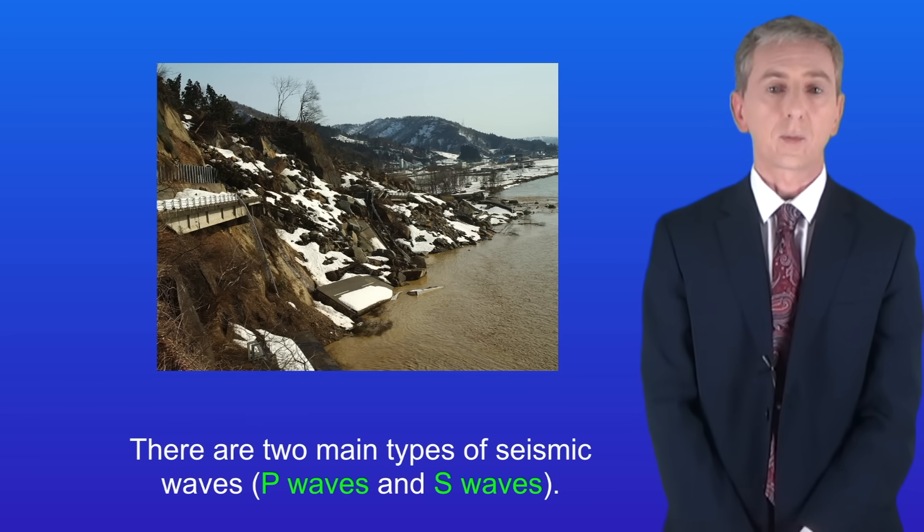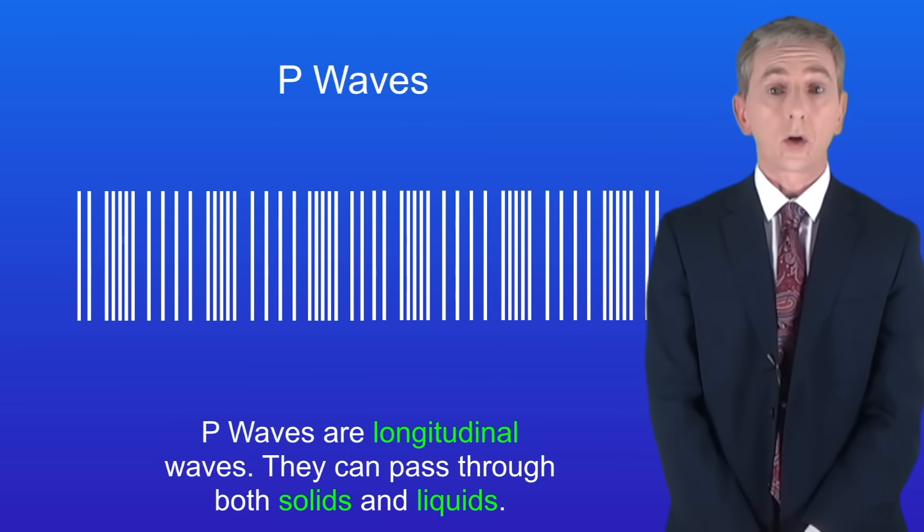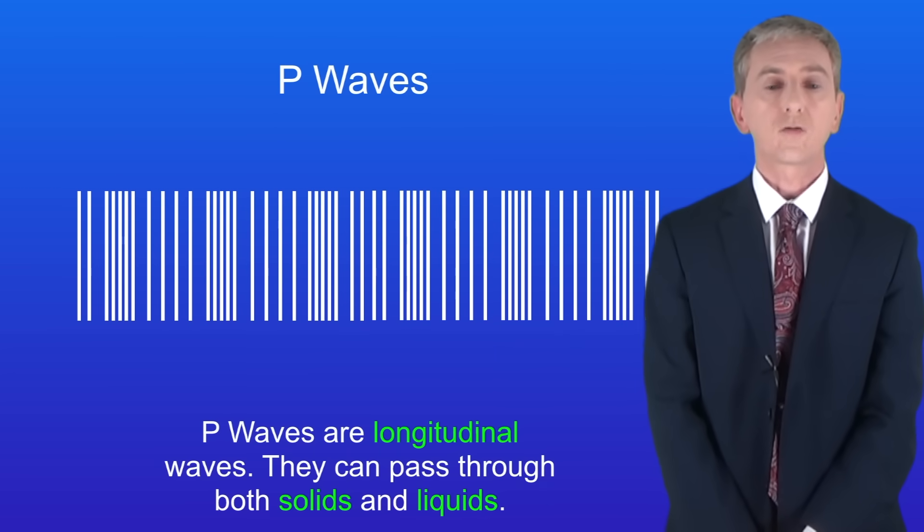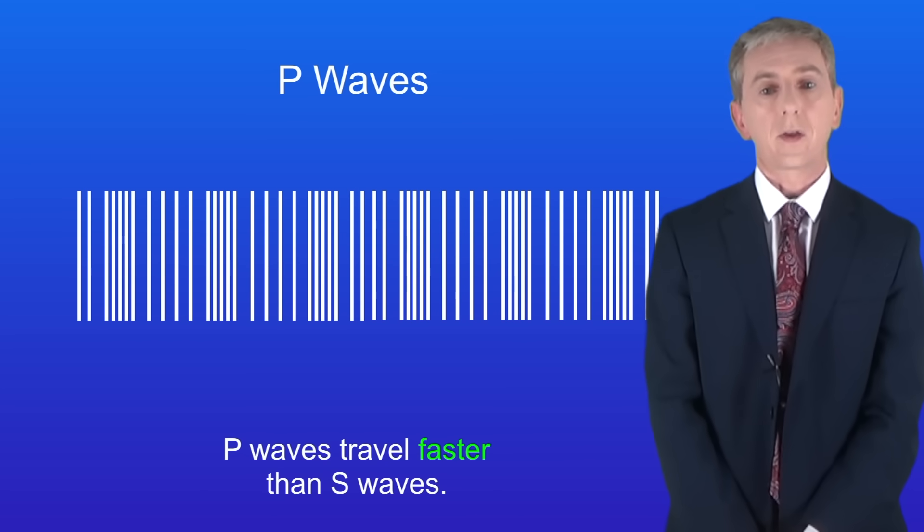Now there are two main types of seismic waves. These are called P waves and S waves. P waves are longitudinal waves and they can pass through both solids and liquids. P waves travel faster than S waves.